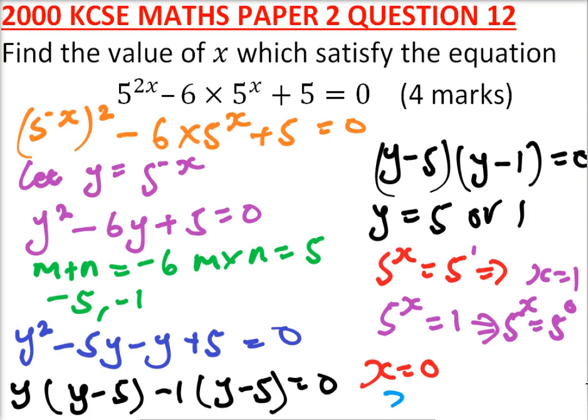Our answer is x is equals to 0 or 1, and that's how you work out that question. You get yourself 4 marks.